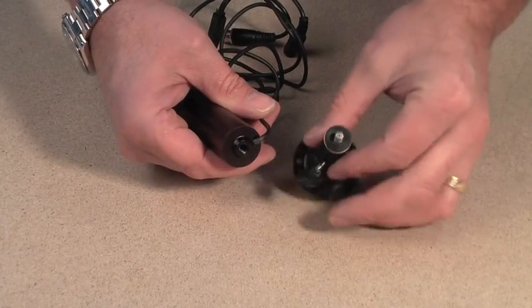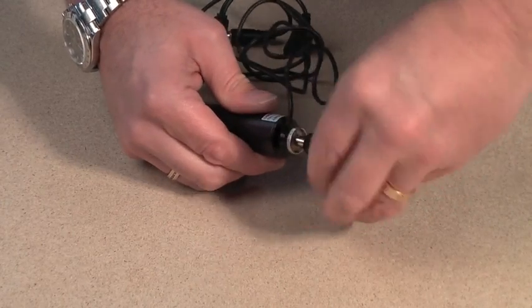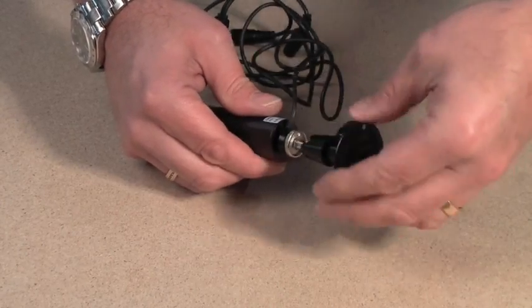The first thing you have to do is to insert the mount into the back of the camera body. Simply screw clockwise as far as it will go.